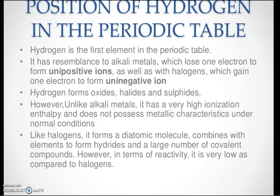Hydrogen is the first element in the periodic table. It has resemblance to both the alkali metals and the halogens. It shows the property of losing one electron to form a unipositive ion. Any substance that donates one electron becomes positive, so hydrogen has the ability to donate one electron and become unipositive. Similarly, it also has the ability to accept an electron and form a uninegative ion, similar to halogens.